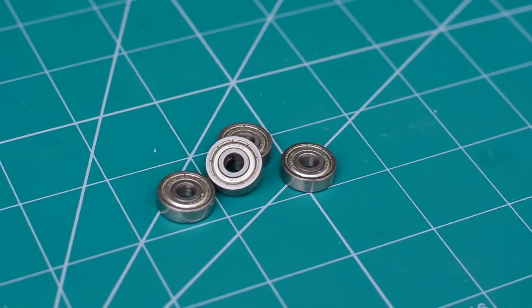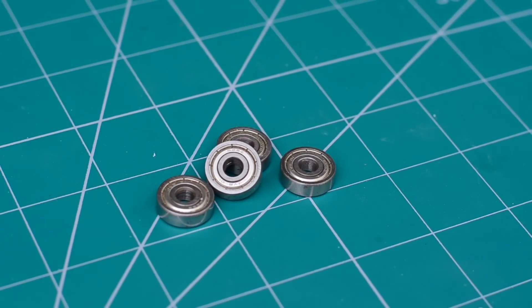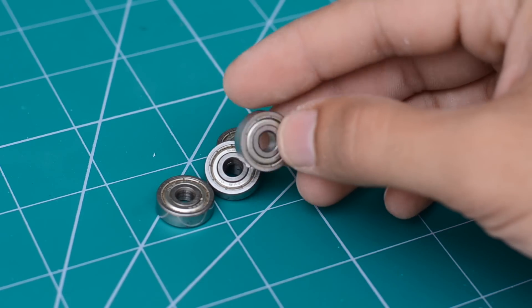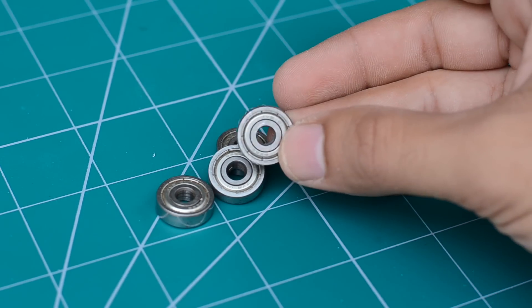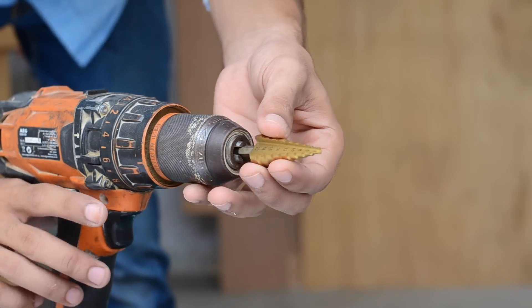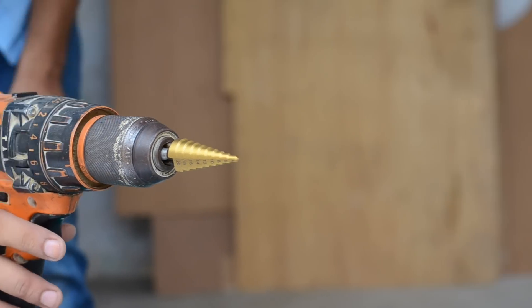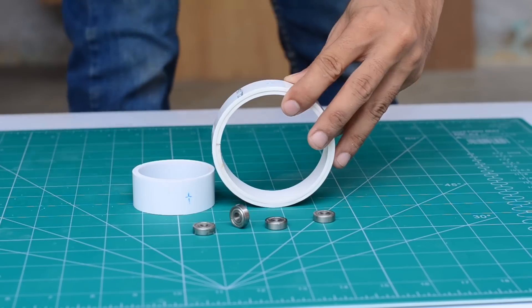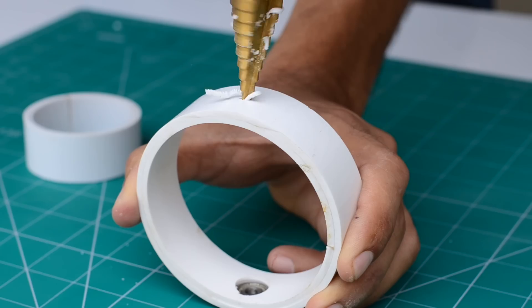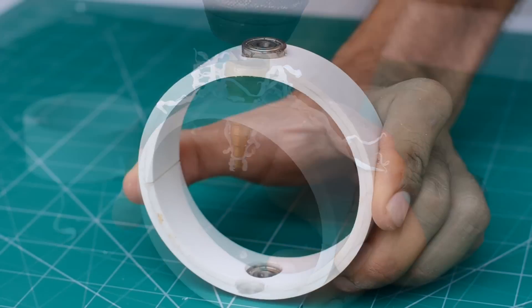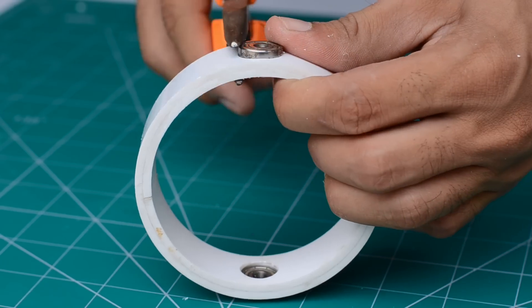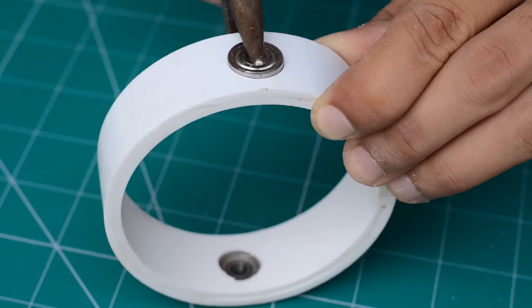For both X and Y axis I'm using a pair of ball bearings measuring 5 mm at the inner side while 16 mm on the outer side. For that I drilled a pair of 16 mm holes on either side of both 2 and 3 inch PVC strips using a step drill. The ball bearings were then inserted inside each of these holes using a plier.